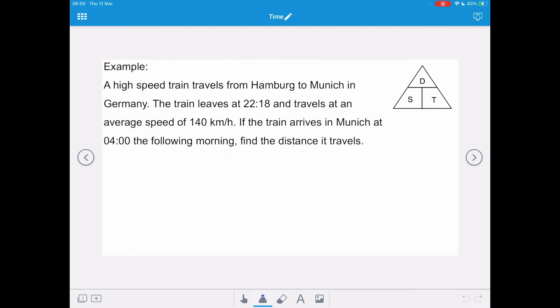In this example, a high-speed train travels from Hamburg to Munich in Germany. The train leaves at 22:18 and travels at an average speed of 140 kilometers per hour. If the train arrives in Munich at 4 o'clock the following morning, find the distance it travels. So we're looking for distance. So if we go to our distance-speed-time triangle, distance equals speed multiplied by time.